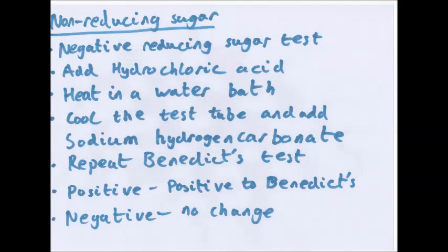If there's no change, there might be non-reducing sugar. If you're doing a non-reducing sugar test, you have to do the reducing sugar test first — because if you do the non-reducing sugar test and it comes out positive, it could just be a reducing sugar. But if you do the reducing sugar test first and it's negative, you then add hydrochloric acid, heat in a water bath, cool in another test tube, and add sodium hydrogen carbonate. Then repeat the Benedict's test. If you get the blue to green to yellow to orange to red change, it's a non-reducing sugar; no change is negative.